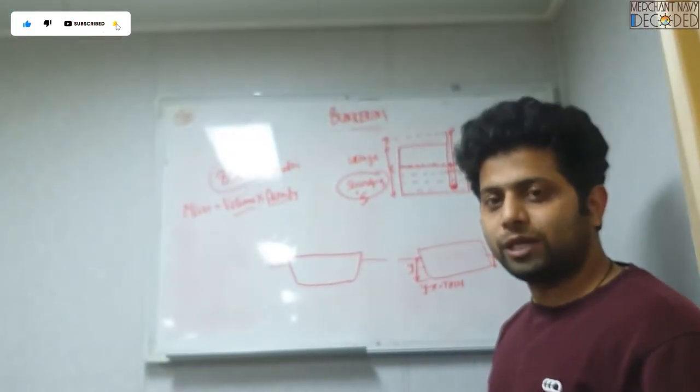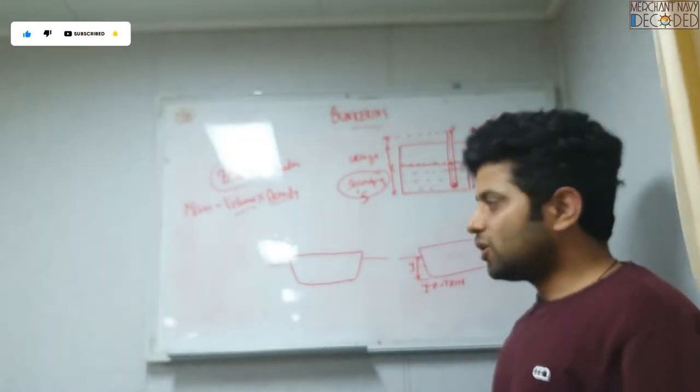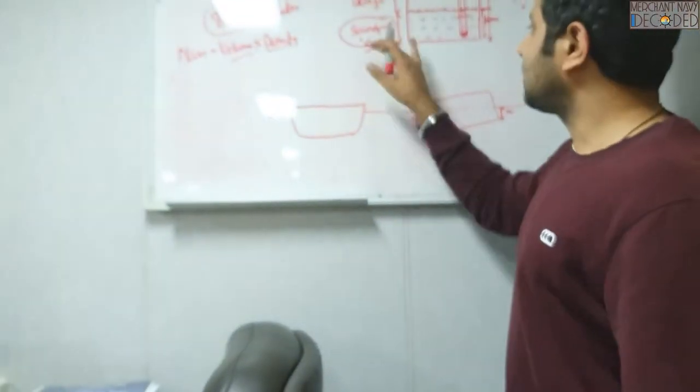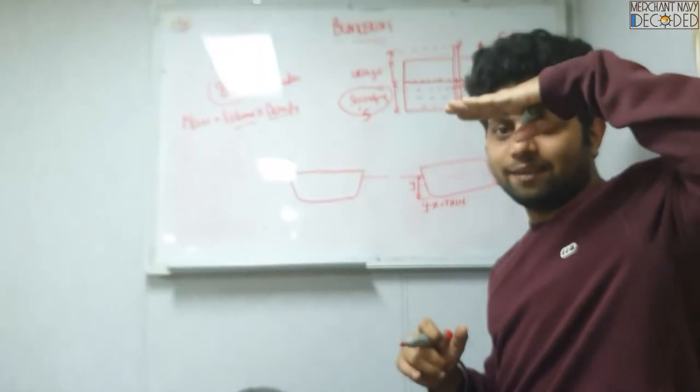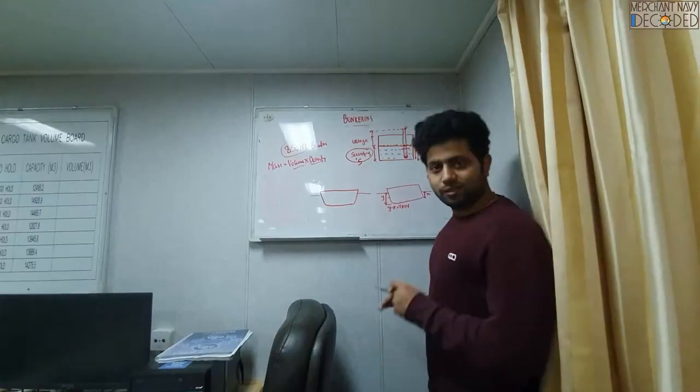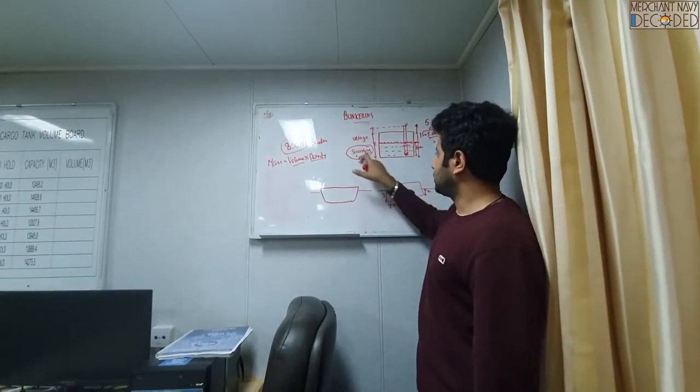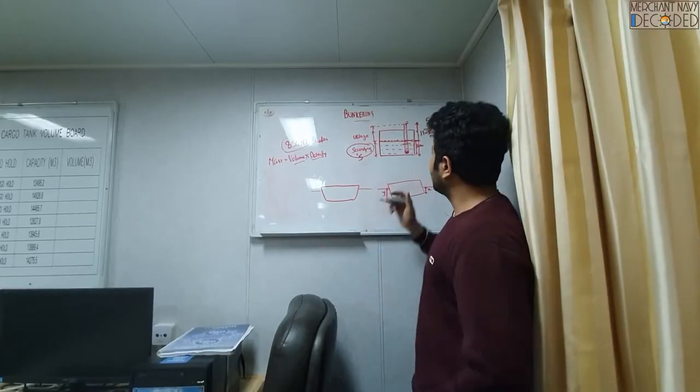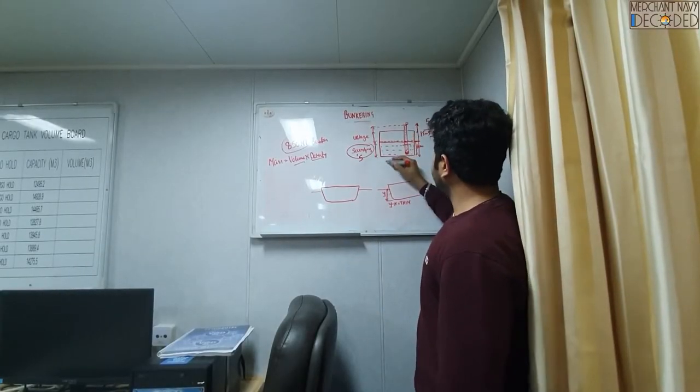Again, this is called sounding and this is called ullage, which is very very important for you guys to know. So it depends. Normally if you have very low level, so normally people put full inside and get the sounding. If it is at a very higher level, they don't want to make it completely dirty, so they take the ullage. Understood? This is what you have to know. So then you go through the table and you see, okay my sounding is say 10 meters.